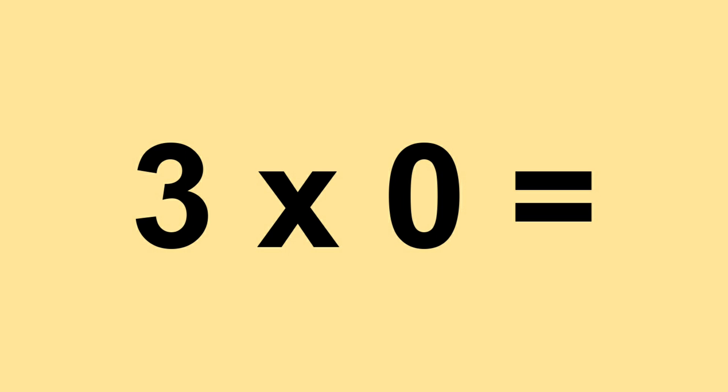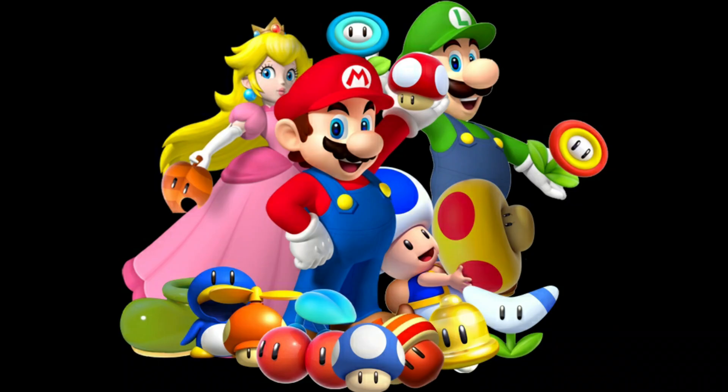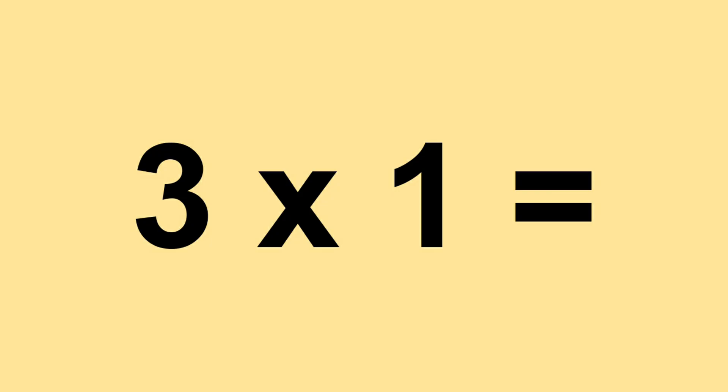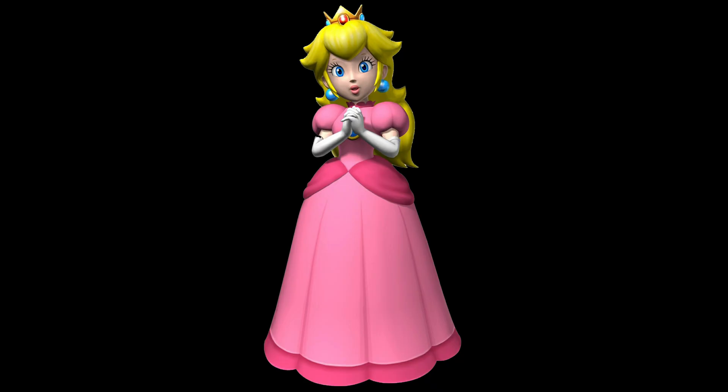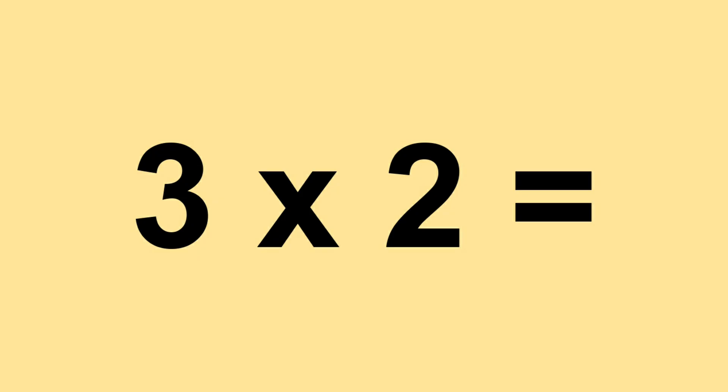3 times 0 equals 0. 3 times 1 equals 3. 3 times 2 equals 6.